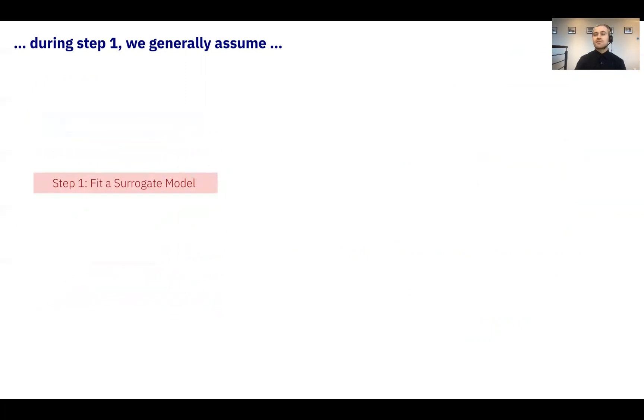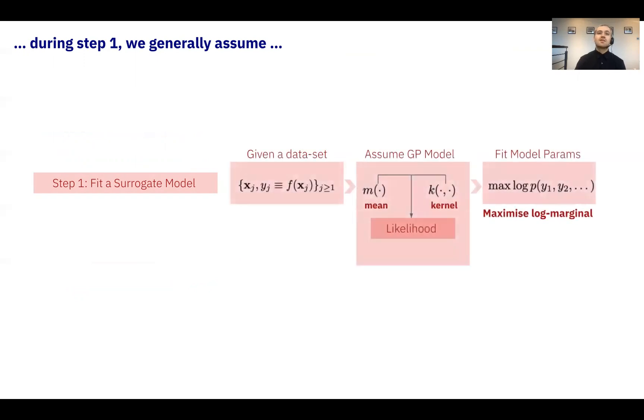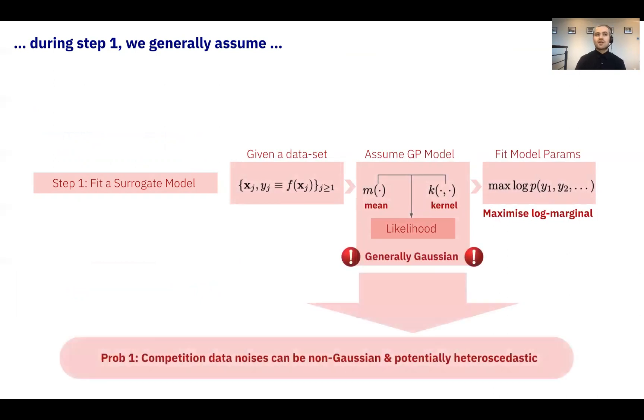During the surrogate fitting, one typically assumes a Gaussian likelihood in the GP model. Unfortunately, across the competition data, noises can be highly complex, leading us to realize the first problem of non-Gaussian likelihoods.